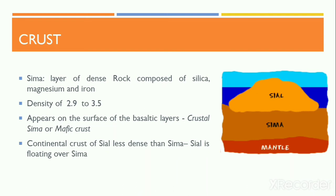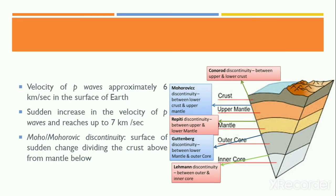Beneath the SIAL layer lies a layer of dense rock mainly composed of silica, magnesium, and iron, with a density of 2.9 to 3.5. This layer appears on the surface as basaltic layers and is termed SIMA, also called crustal SIMA or mafic SIMA. The continental crust of SIAL is less dense than the oceanic crust of SIMA, so SIAL floats over SIMA, with an intermediate mixed layer between them. Very large areas of SIAL are more than 1,500 million years old, while no part of SIMA is older than 200 million years. The velocity of P waves is approximately 6 km/s over the surface, and increases suddenly to 7 km/s in the interior. This surface of sudden change, dividing the crust above from the mantle below, is the Mohorovičić discontinuity, named after the Yugoslavian seismologist Mohorovičić who discovered it in 1909.